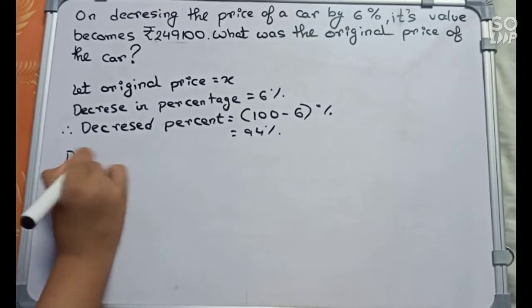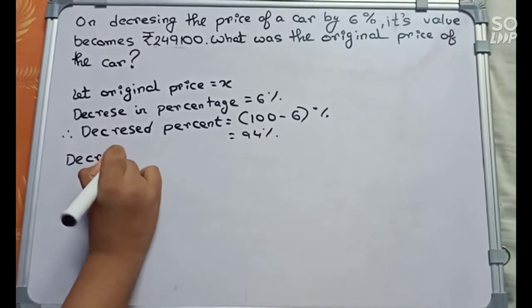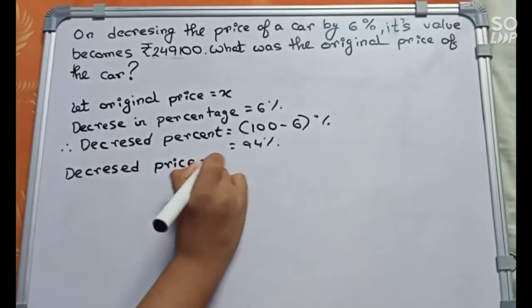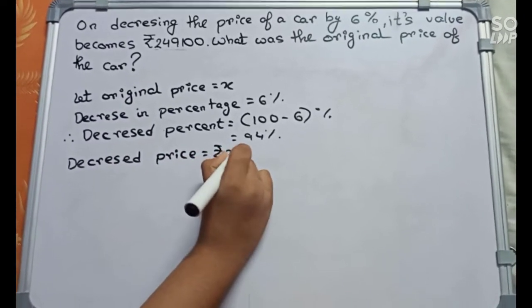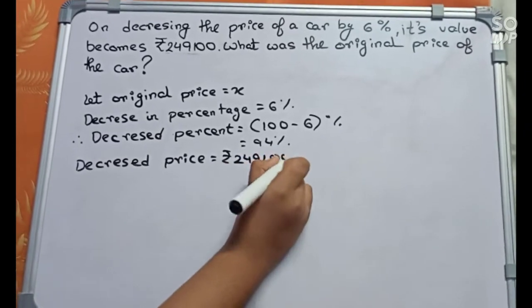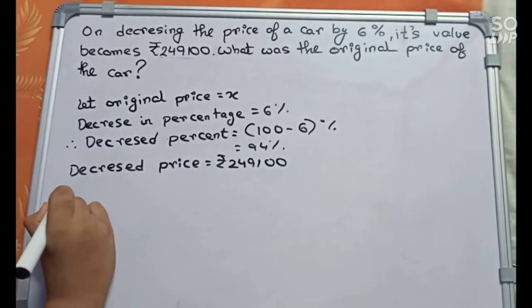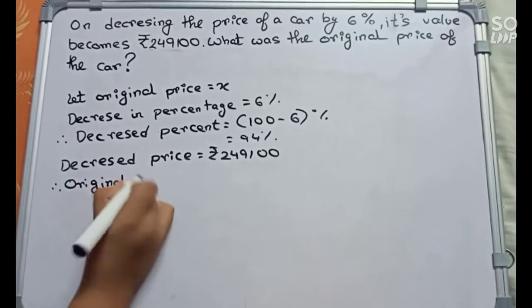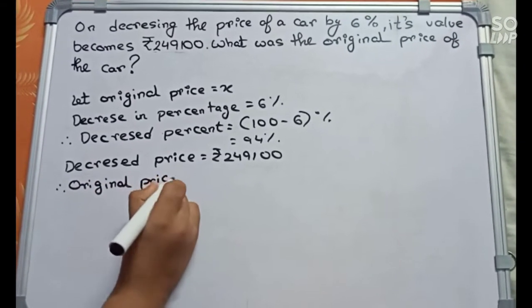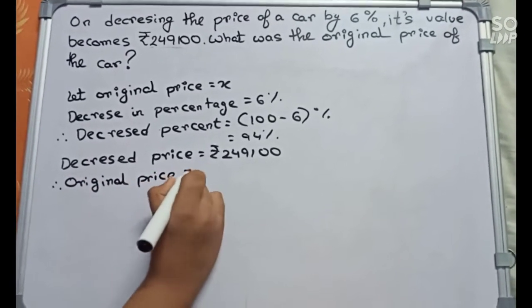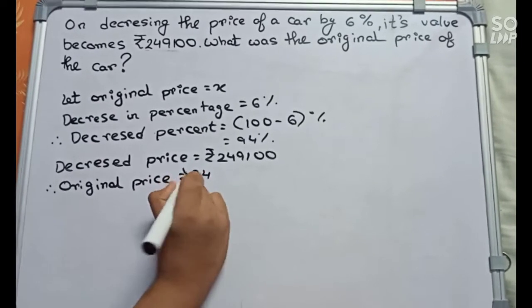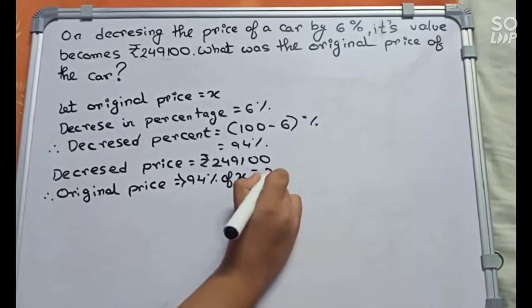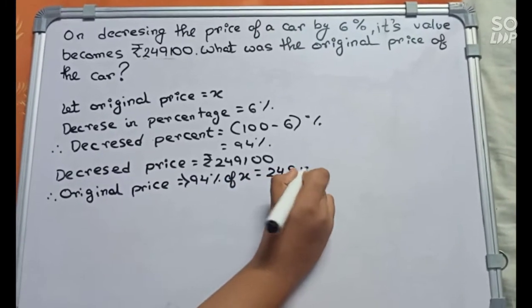The decreased price equals to rupees 2,49,100. Therefore, original price: 94% of x equals to 2,49,100.